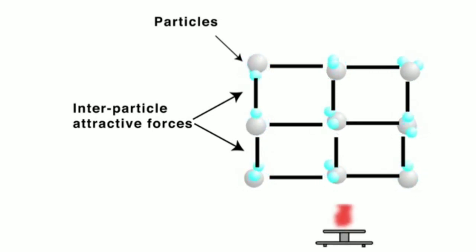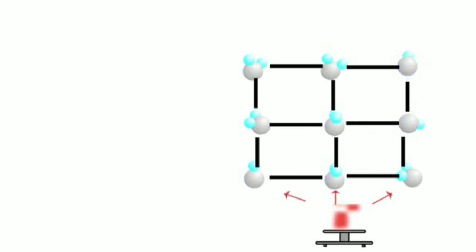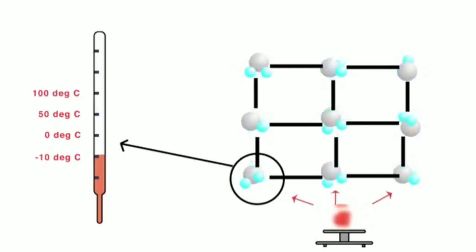When energy is supplied to ice in the form of heat through the burner, the particles absorb heat and convert this into kinetic energy. As a result, their vibrations increase. This increased kinetic energy gets recorded by the thermometer as an increase in temperature.